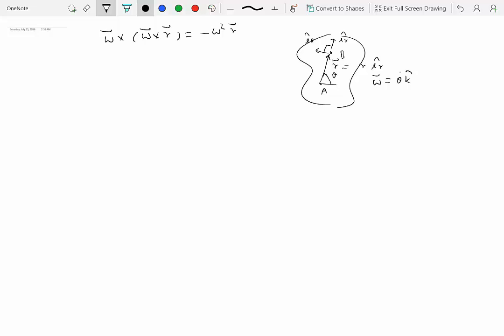So in case of a rigid body moving in a plane, it turns out that we can simplify this, which involves two cross products, as something like this where we write minus omega square, and omega is just a number, times the position vector.